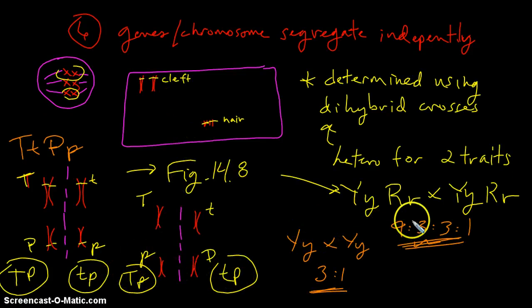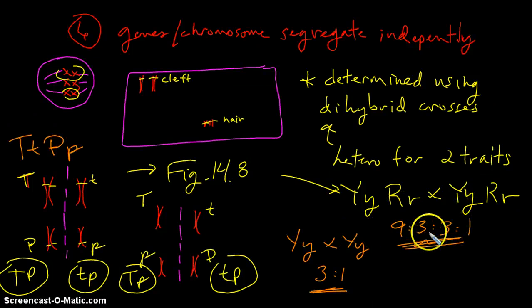So all these different possibilities can exist, and again, you can fill out your Punnett square or mathematically derive the fact that you get a 9 to 3 to 3 to 1 ratio if you have individuals with these genes combining gametes.